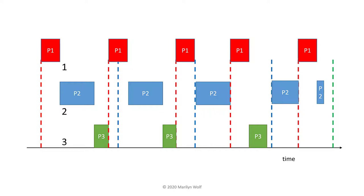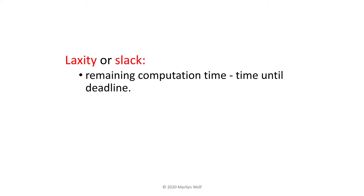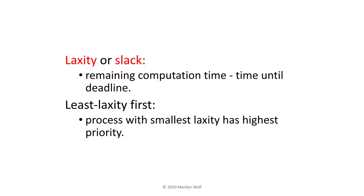Consider this example. At one point in time, P1 has the highest priority because it's closest to its deadline. Moving forward, P2 has the highest priority because it is closest to its deadline. Moving forward a little more, P1 once again has the highest priority. We have to go all the way out to find a time at which P3 has the highest priority. Yet another scheduling algorithm makes use of laxity or slack — the remaining computation time until the deadline. Least laxity first scheduling gives priority to the process with the smallest laxity, which is not the same as giving priority to the process closest to its deadline.